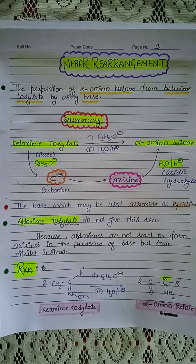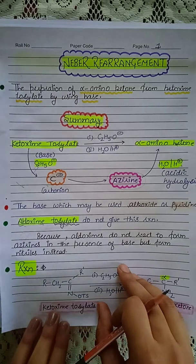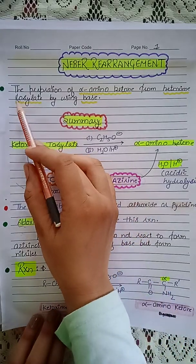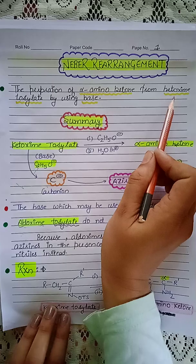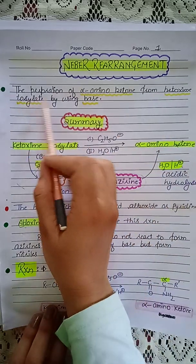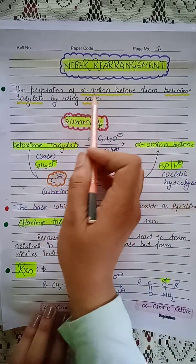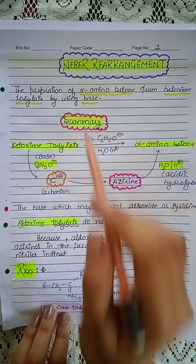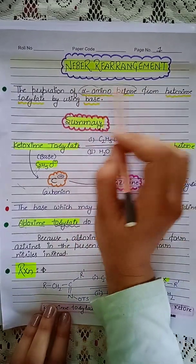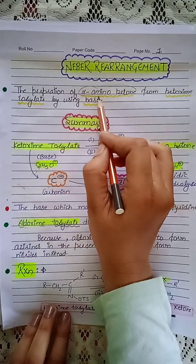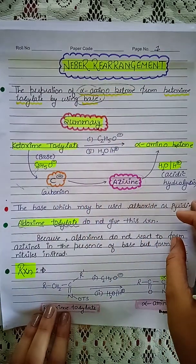Hello everyone, myself Surekha and I'm a student of MSc Chemistry. My today's video lecture is on the Neber rearrangement. The Neber rearrangement is the preparation of alpha-aminoketone from ketoxime tosylate by using a base.